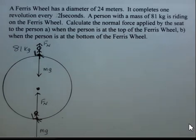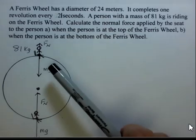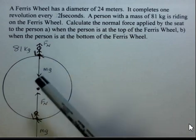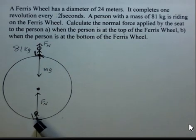The Ferris wheel has a diameter of 24 meters and it completes one revolution every 21 seconds. We would like to know the value of the normal force when the person is at the top of the Ferris wheel, and then in part B, the normal force when the person is at the bottom.